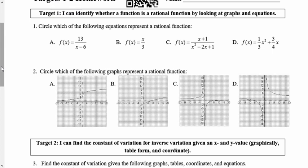Target 1 was identifying whether a function is rational by looking at graphs and equations, and target 2 was finding the constant of variation for inverse variation. Let's do target 1 first. It says circle which of the following represents a rational function. We know the characteristics of rational functions are that it has to be in that distinctive fractional form, because we have to have a numerator and a denominator, but also we have to have x in the denominator. That's one of the things we have to have.